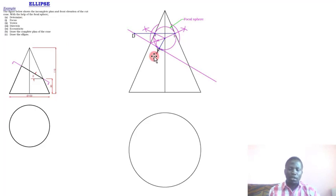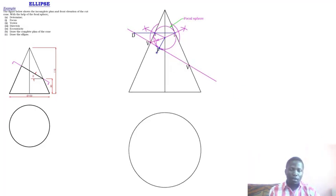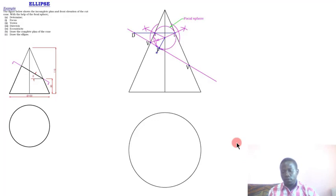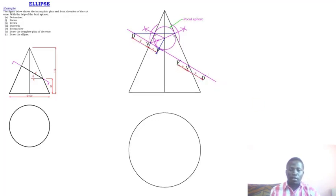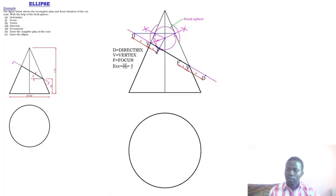Having obtained the focus and the directrix, we also need the vertex. The vertex positions are the points where the sectioning line cuts the cone — you have one on this side and one on the other. Since the ellipse has two focal points, two vertices, and two directrices, we put the directrix on the other side as well. We do this by transferring the distances: mark FV on this side, then VD on this side.